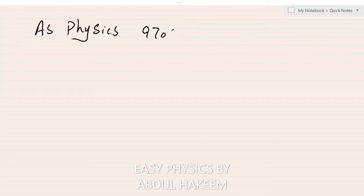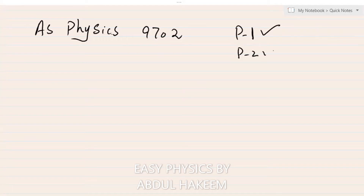For AS Physics 9702, we have to prepare paper one, which is MCQ, paper two, which is theory, and paper three, which is practical lab.